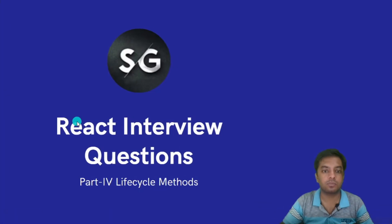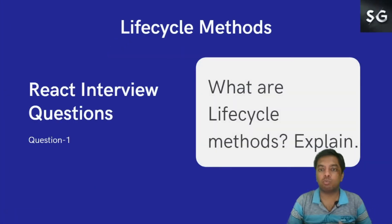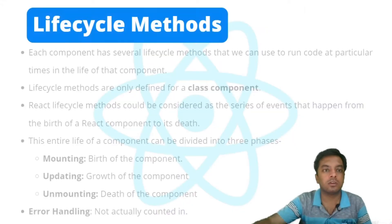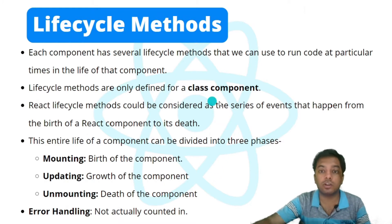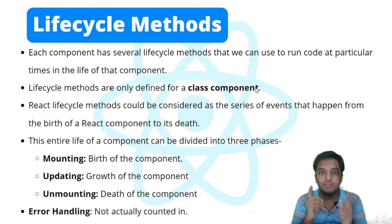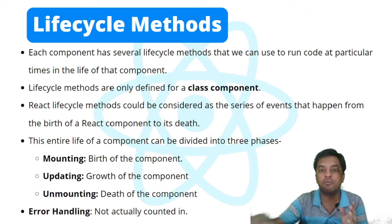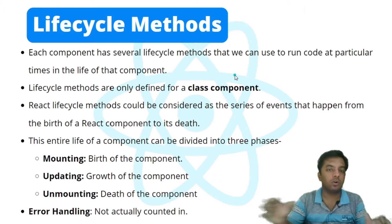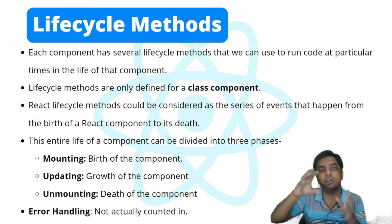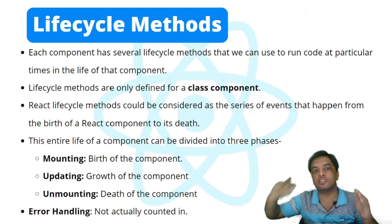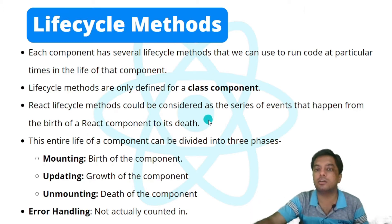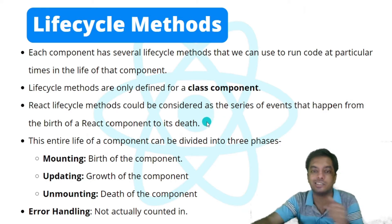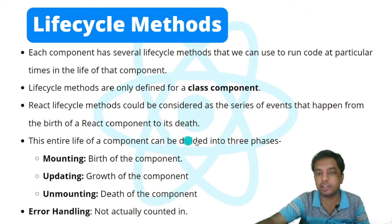The very first question is: what are lifecycle methods? Each component has several lifecycle methods that we can use to run code at a particular time in the lifecycle of that component. Lifecycle methods are only defined for class components. These are different methods which are called throughout the entire life of a component — from its birth to its destruction. React lifecycle methods could be considered a series of events that happen from the birth of a React component to its death.